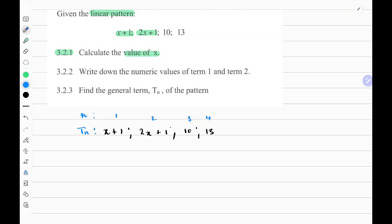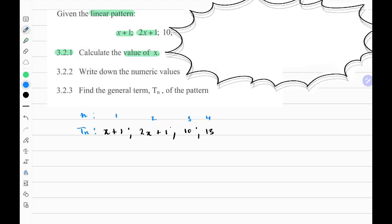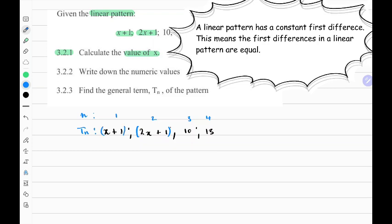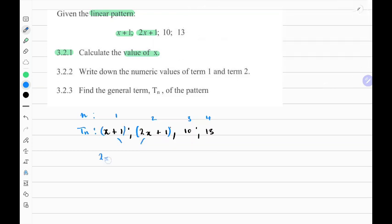Now an important property of linear patterns is that the first differences is a constant. So let's find the first differences for the given number pattern. So t2 minus t1 would be 2x plus 1 minus the whole of x plus 1. This can be viewed as minus 1. We can apply the distributive property. So this reduces to 2x plus 1 minus x minus 1. 2x minus x is x. Positive 1 minus negative 1 cancels out. So we can substitute this with a simplified version.